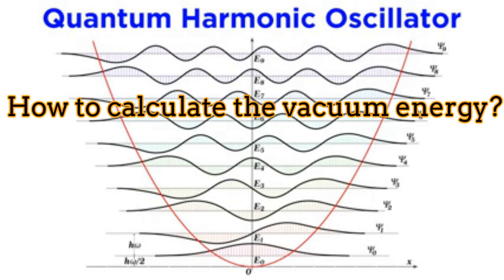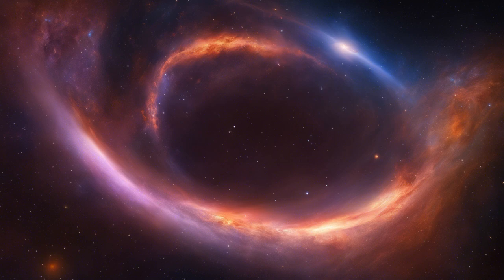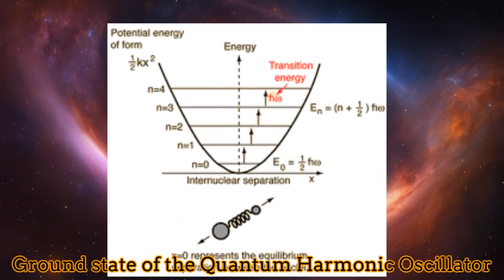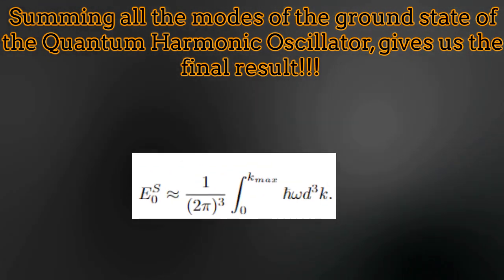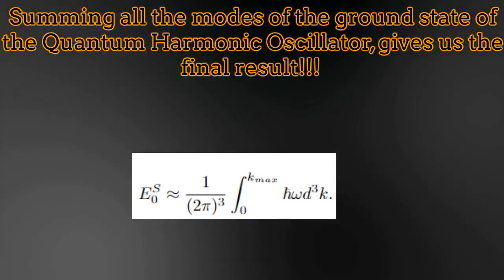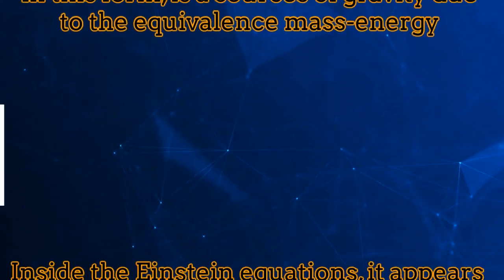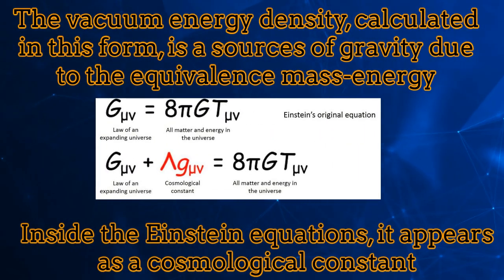But then, how can we calculate the vacuum energy? Vacuum energy emerges naturally from the zero-point or from the ground state of the quantum harmonic oscillator. The reason for this is that in the quantization process in quantum field theory, for the quantum fields, we use exactly the same algebra of the quantum harmonic oscillator. If we integrate all the frequency modes over the vacuum energy, then we get the final result. Inside the Einstein equations, the vacuum energy density emerges as a positive cosmological constant generating the accelerated expansion of the universe.